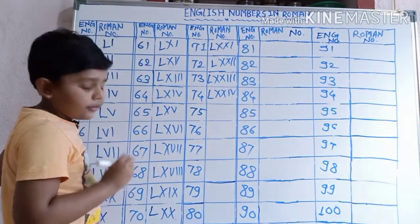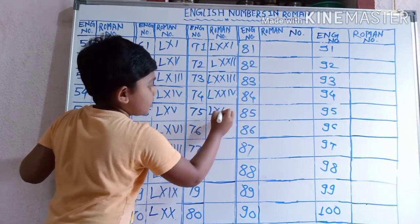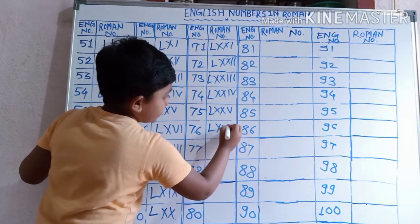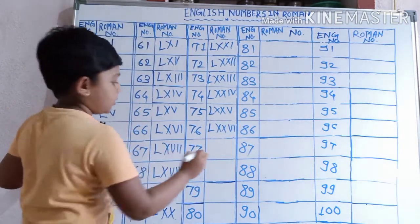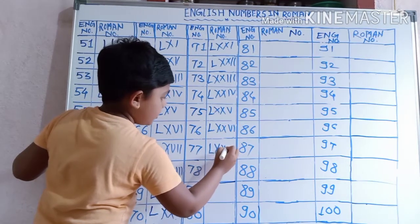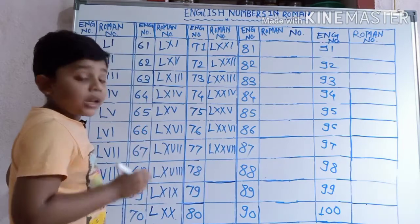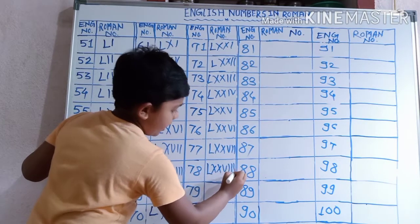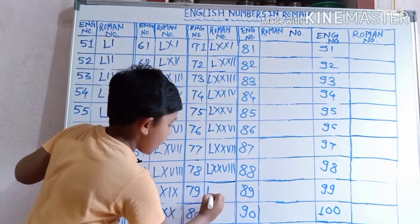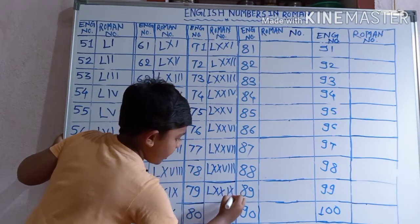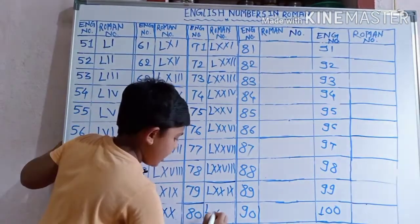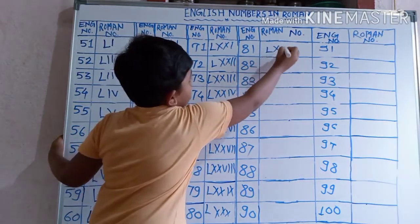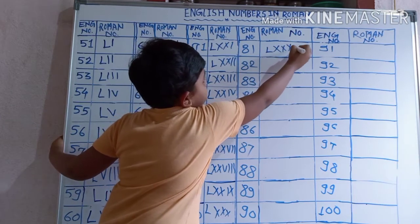75 ko: L, X, X, V. 76: L, X, X, V, I. 77: L, X, X, V, I, I. 78: L, X, X, V, I, I, I. 79: L, X, X, I, X. 80: L, X, X, X. 81: L, X, X, X, I.